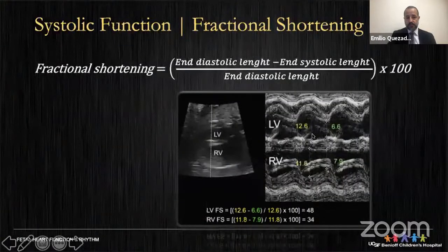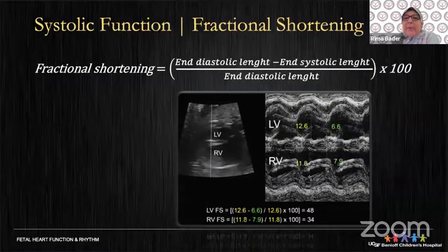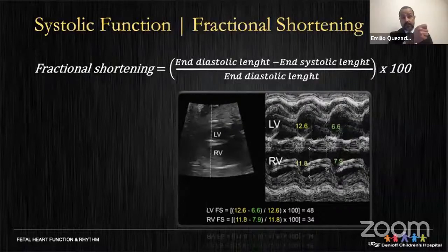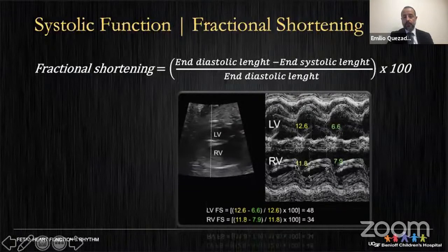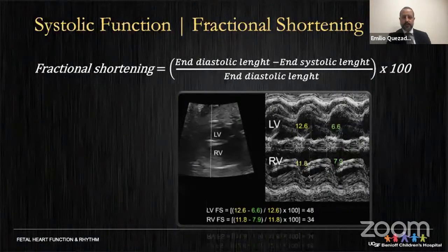Once you have the correct position, you measure the systolic and diastolic portions. You need clarity of the edges of the septum and walls. You can increase gains to make the tissue slightly more lucid to ease measurement. If you have nice images, you can also use a short axis view, finding the two papillary muscles similar to transthoracic echo in postnatal life.